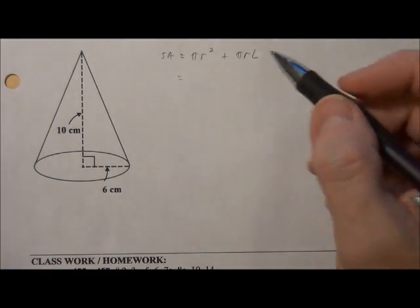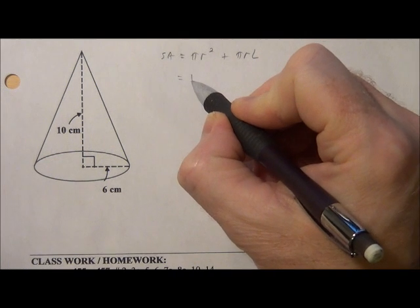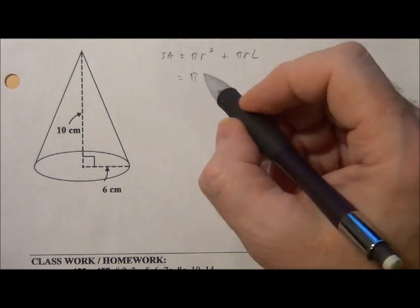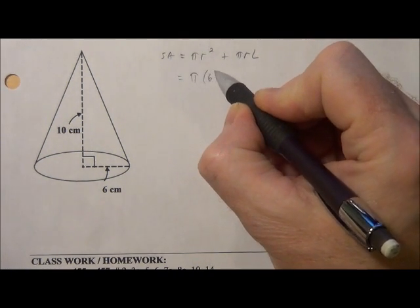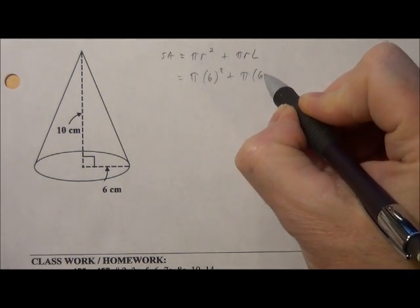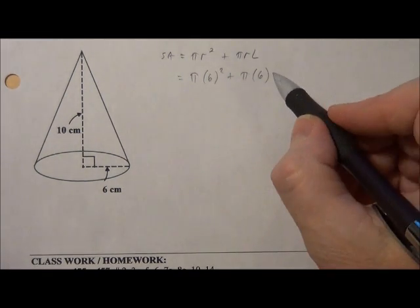So we substitute in some of the values. We got pi, and I'm just going to leave this in terms of pi, times 6 squared, plus pi, times 6, times l.